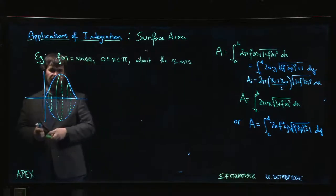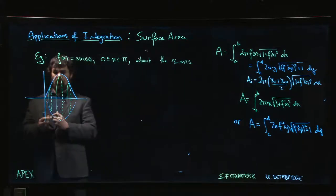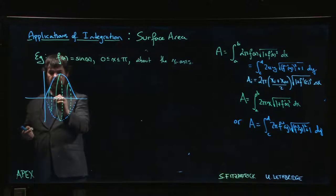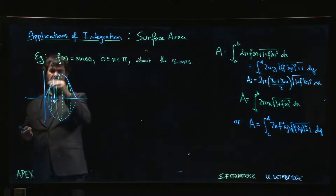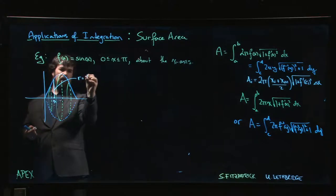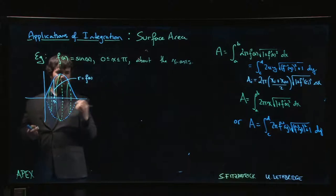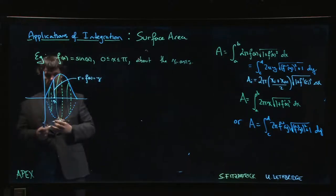So if we're going about the x-axis, we have to think about for a given x value, here's x, the radius of one of these circles that we're revolving. The radius is going to be f of x, or if you like, y.